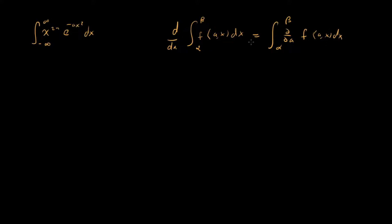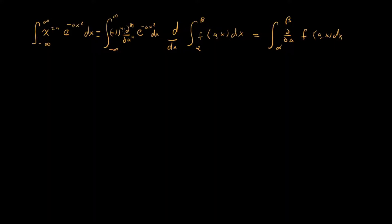This is the property we're going to use to solve this integral. First, let's note that the original integral is actually the same as taking minus one to the n times n derivatives with respect to a of just a Gaussian. Let's think about why — if we take a derivative of e to the minus ax squared with respect to a, we just pull down a minus x squared.